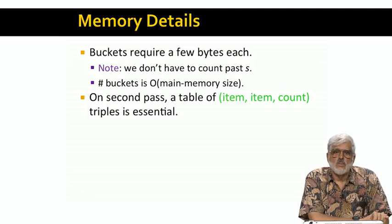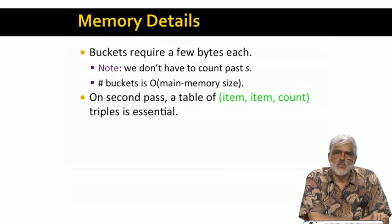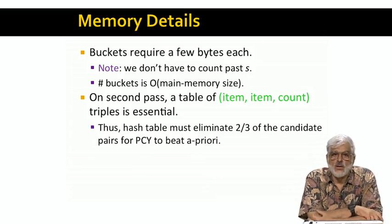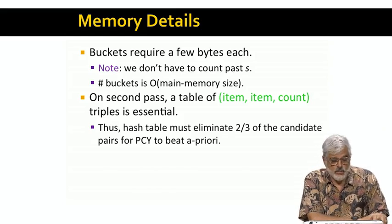When we count pairs on the second pass, we have to use the tabular method. The problem is that the pairs eliminated because they hash to an infrequent bucket are scattered all over the place and cannot be organized into a nice triangular array. As a result, we should not use PCY unless we can eliminate at least two-thirds of the candidate pairs when compared with A Priori.